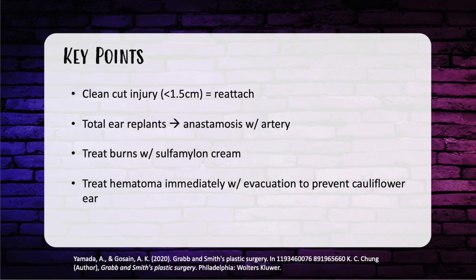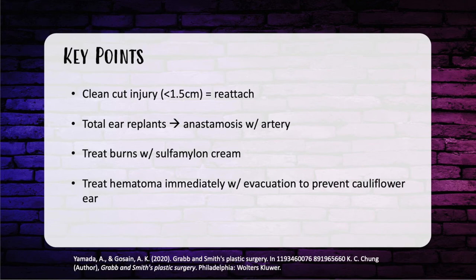Small avulsed ear pieces less than 1.5 centimeters from a clean cut injury should be reattached within six hours as a composite graft, especially in children. For total ear replants, ears have good outcomes even if at the time of microanastomosis you cannot find a vein to anastomose — you replant the ear with just the artery and use leech therapy post-op.